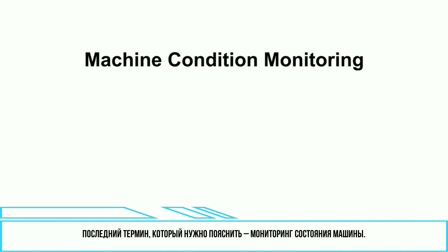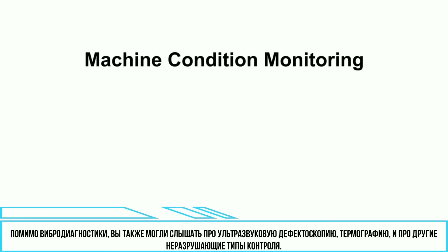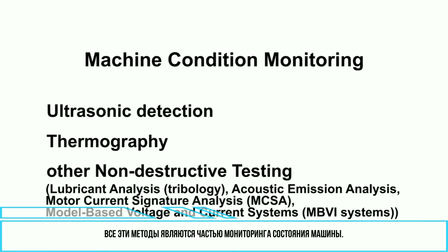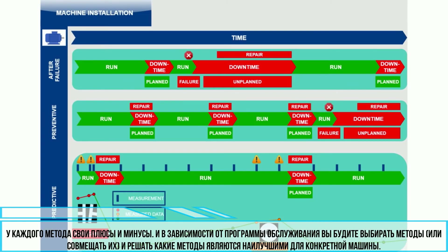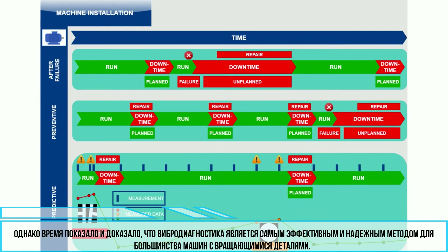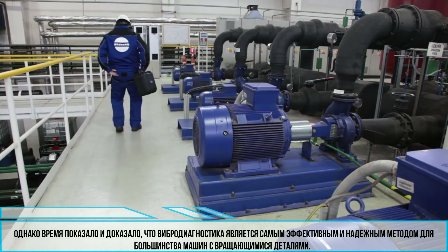The last term to clarify is machine condition monitoring. There are more methods for evaluating a machine's condition and its faults. Besides vibration diagnostics, you may have heard about ultrasonic detection, thermography, or other non-destructive testing. All of these methods are part of machine condition monitoring. Each method has its pros and cons — it is up to your maintenance program which methods you select or combine, and which are best for your particular machines. However, during the last few decades, it has been found and proven that vibration diagnostics is the most efficient and reliable method for most rotating machinery.